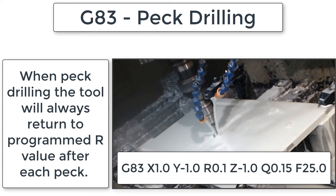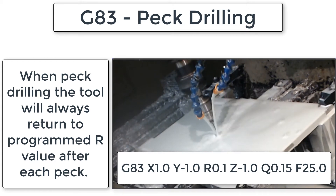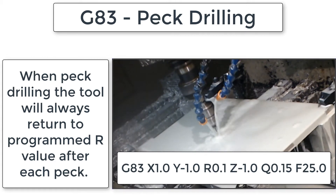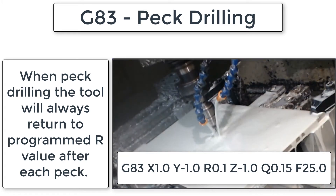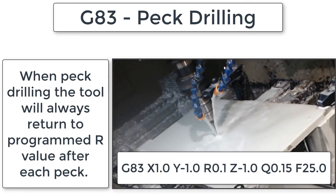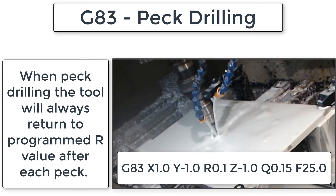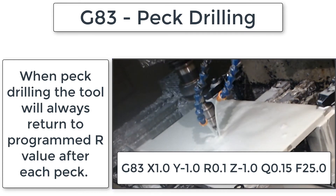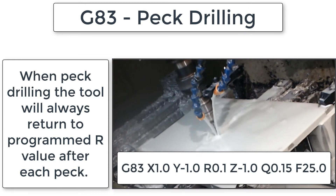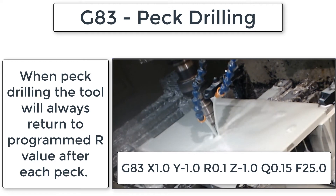Next, the tool will feed at the specified feed rate — in this case 25 inches per minute — from the R plane in the negative Z direction by the Q value of 150 thou in this instance. The Q is always the incremental pecking value. Therefore, at the end of the first peck, the tool tip will be at Z negative 50 thou, because it started at Z0.100 thou and fed through 150 thou.